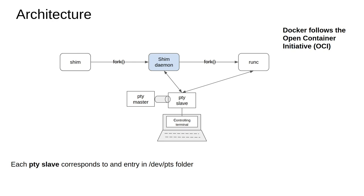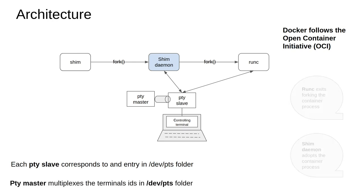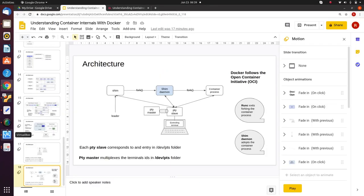Next, runc launches the container application. It takes the container application based on instructions from the containerd manager and execs that new container process on itself, then exits. Since runc exits without waiting for the container process to continue, shim daemon becomes the parent of the container process. This is how the daemon ecosystem actually works.